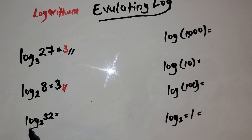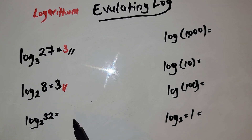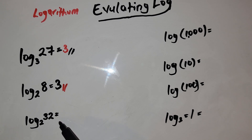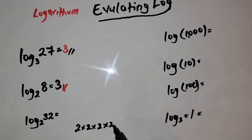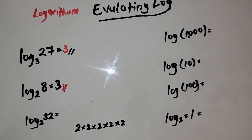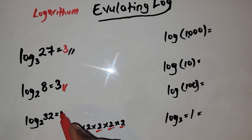Let's try question number 3: log base 2 of 32. You want to ask yourself, 2 to what power gives you 32? So 2 times 2 times 2 times 2 times 2 — that's 4, then 8, then 16, then 32. We have five 2s.